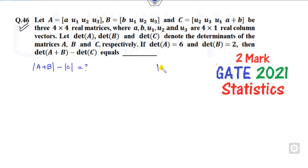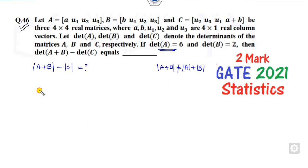First, make sure that the determinant of A plus B is not always equal to det(A) plus det(B). The determinant of A is given to you, B is given to you, but C and A plus B are not given to you directly. If you find the matrix A plus B by adding them, it will be 2·u1, 2·u2, and 2·u3.